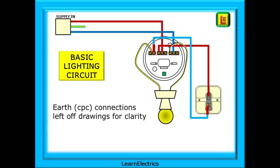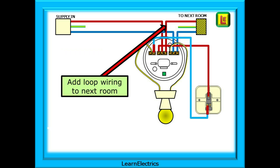This is the basic one-way lighting circuit as you would expect in a bathroom. Notice that in all our drawings we've left the earth or CPC connections off the drawings, just for clarity, to make it easier to follow what is happening. In real life, please make sure that the CPCs are properly connected. Some lighting circuits will have a loop to the next room connected at the ceiling rose.